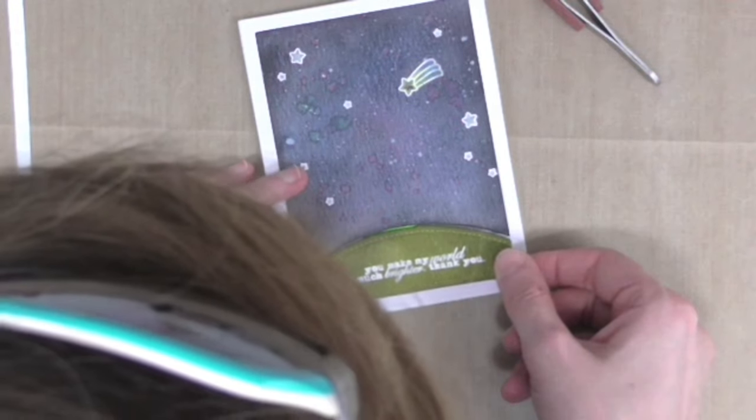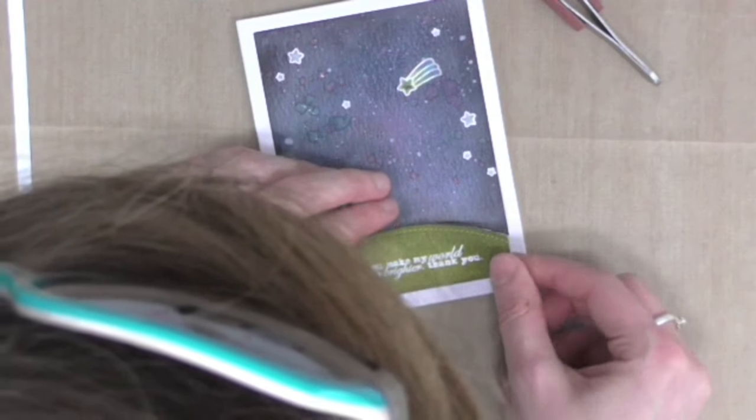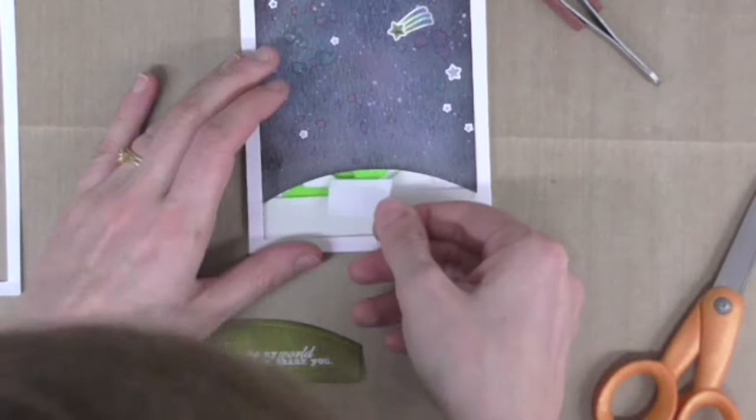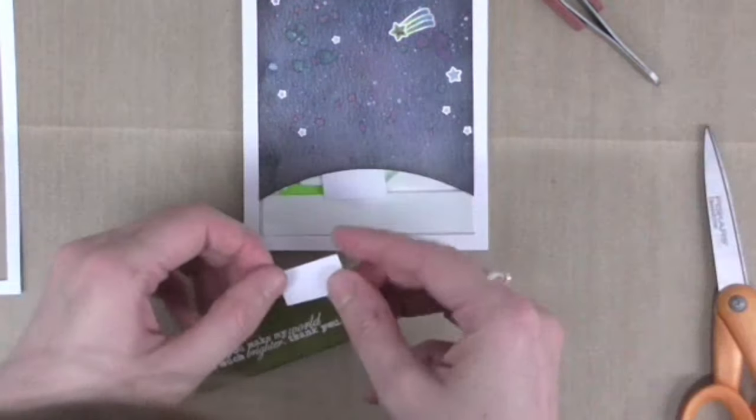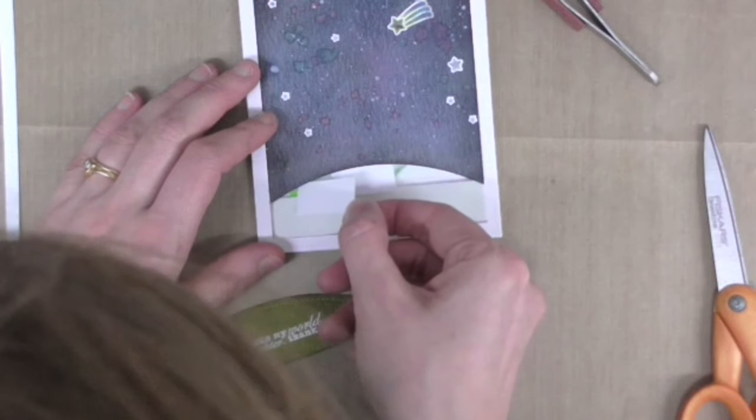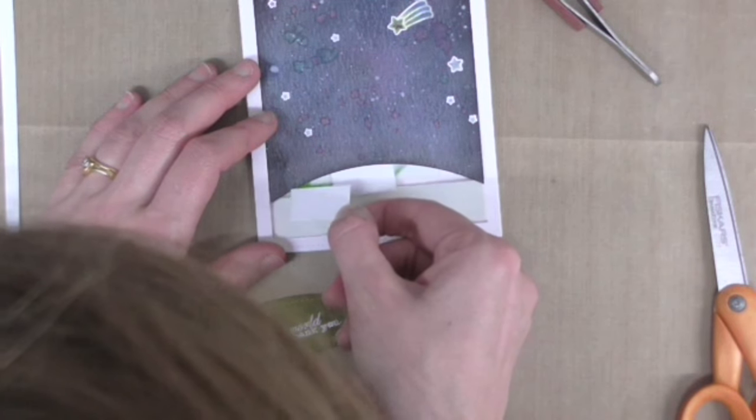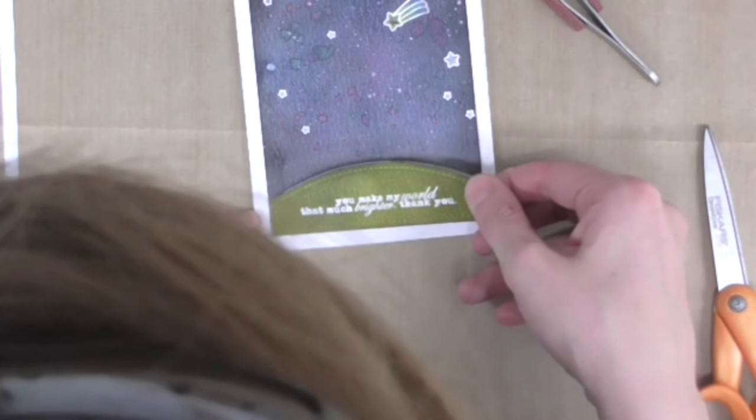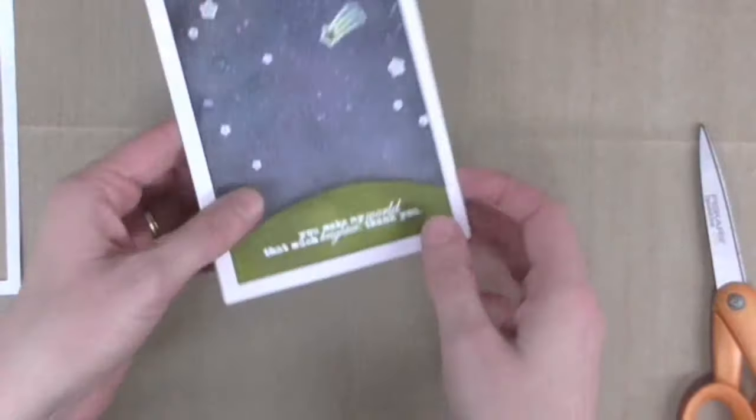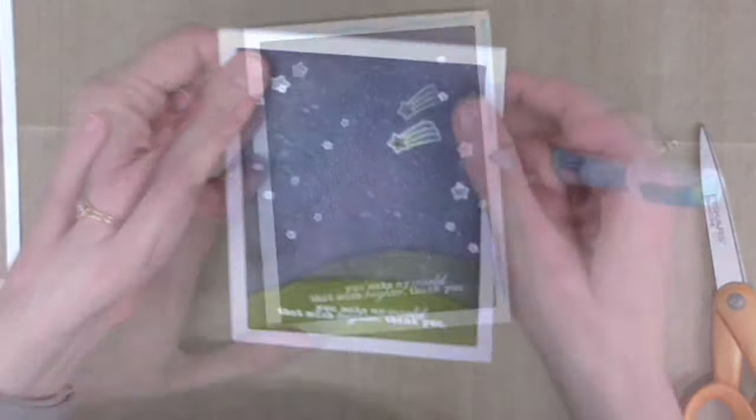Now I was just about to stick my grass on when I realized you could see the green neon shining through from the post-it note. So I've just taken some scrap cardstock here, cut it into a little rectangle, and I'm just going to tuck that in underneath my nighttime sky. So if you can see through the little tiny gap, it's white rather than neon green.